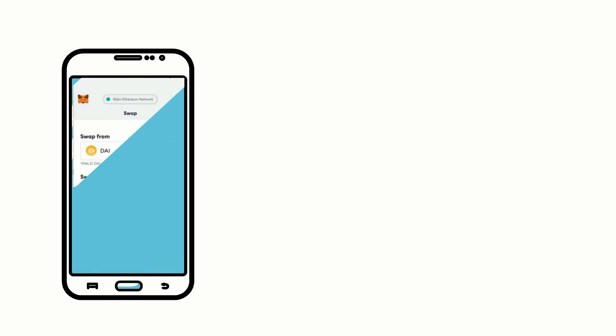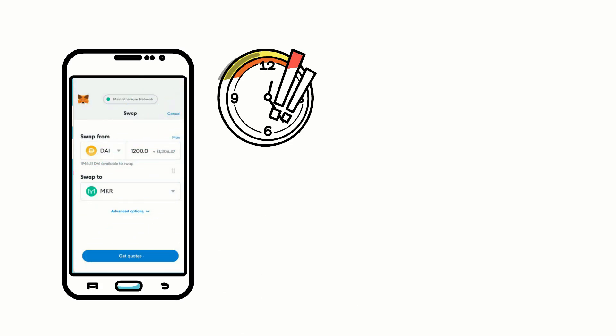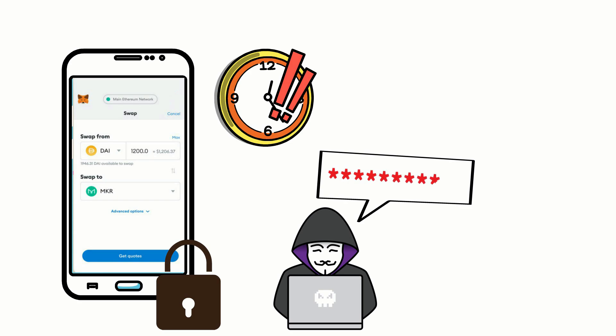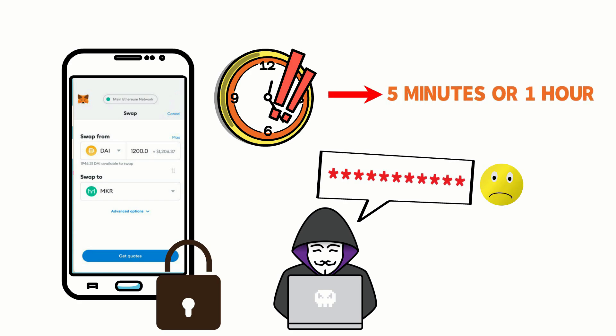MetaMask also keeps your wallet safe by automatically locking if you haven't used it in a while. So even if someone got a hold of your password, they wouldn't be able to do anything with it. You can set up MetaMask to lock after five minutes or one hour, and most importantly, you can turn MetaMask off easily and quickly.